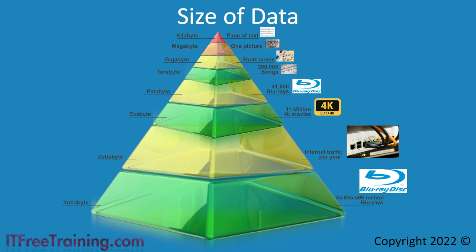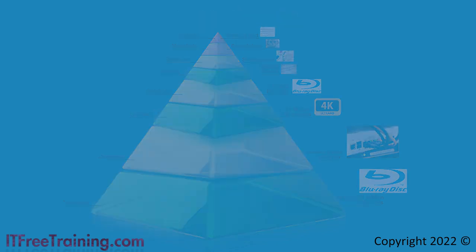An exabyte stores about 11 million 4K movies. If you were to estimate the total storage in the world, this could be measured in exabytes. It is estimated that in 2018 the amount of internet traffic per year had reached a zettabyte, and this will continue to increase each year. Lastly, a yottabyte contains so much data there is nothing currently that comes close — a single yottabyte holds about 45 million million Blu-ray disks. Now that you have an idea how much data exists out there, let's look at how fast we can transfer it.